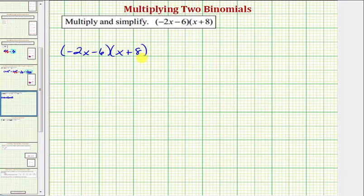To multiply two binomials, we want to distribute both terms in the first binomial into the second binomial, which will give us four products.